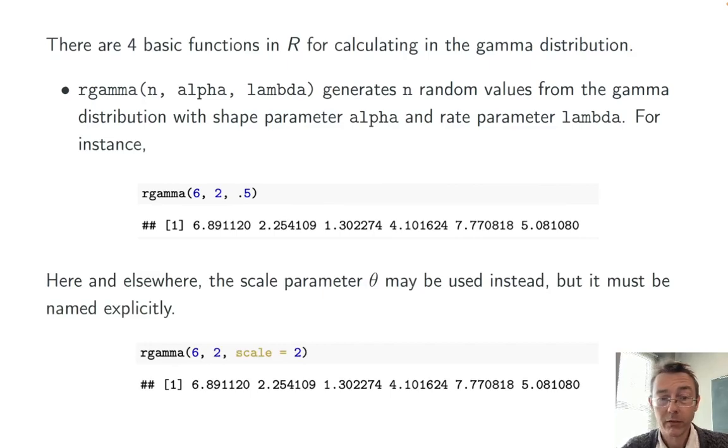Here and elsewhere, the scale parameter theta may be used instead, but it must be named explicitly. To get those same random values as before with the same set seed, we would use rgamma(6, 2, scale = 2), 2 being the reciprocal of 0.5.